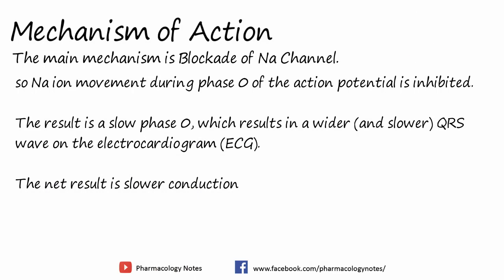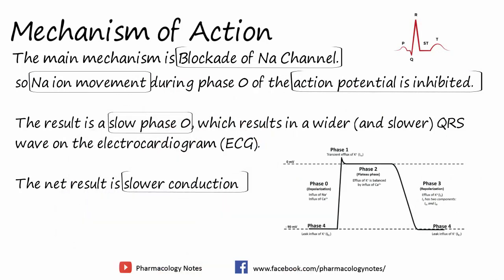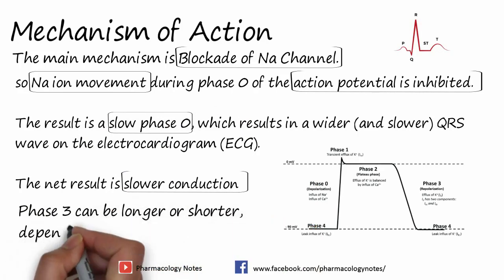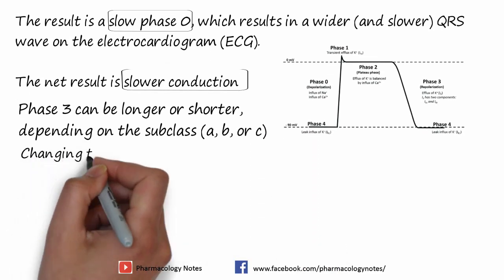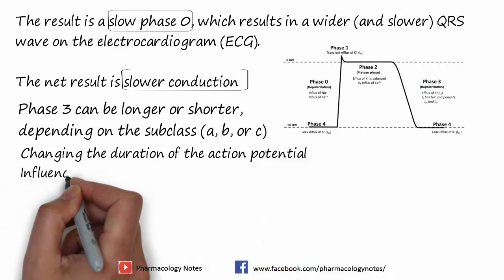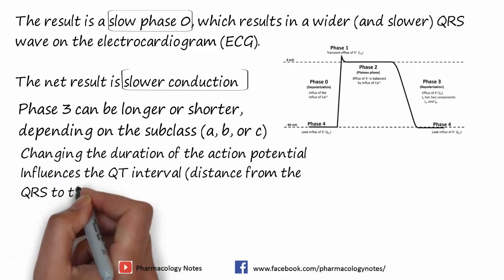You can see in the diagrammatic representation. These sodium channel blockers inhibit sodium ion movement, and phase 0 of the action potential is inhibited, causing slower conduction. As a result, phase 3 can be longer or shorter depending on the subclass — 1A, 1B, or 1C — which is used. Changing the duration of the action potential influences the QT interval, the distance from the QRS to the T wave.